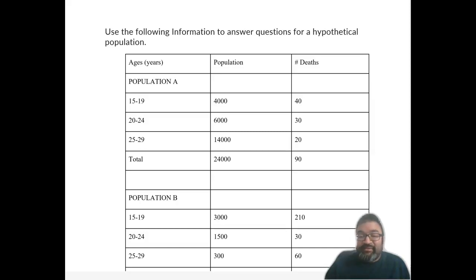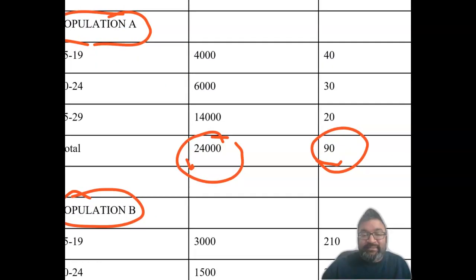As I said, the first thing we're going to be going over is the crude mortality rate. So right here, if you look at the number of deaths, and this is the crude mortality rate for population A, and then we have population B. So 90 is the number of deaths, and then 24,000 is the population.